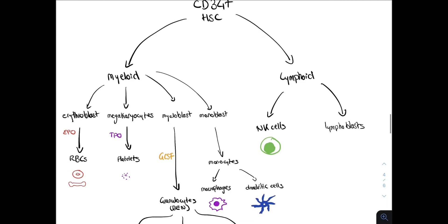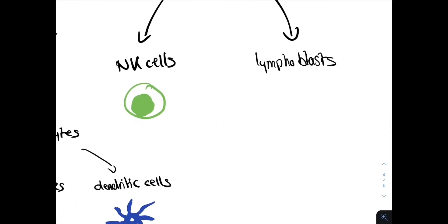On the other hand, lymphoid stem cells can differentiate into natural killer cells or lymphoblasts. The lymphoblasts can sub-differentiate into T cells in the thymus or B cells in the bone marrow. We shall discuss this in more detail in the hematological malignancies series.